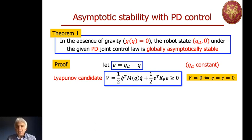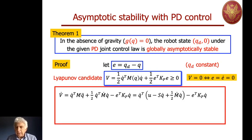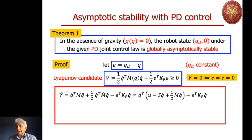So we have a good candidate — a function which is always positive except where we want to be: the desired closed-loop equilibrium state q = qd and q_dot = 0. Now let's consider the time derivative of this function, evaluated along the trajectory of our robotic system — the evolution satisfying the closed-loop dynamic equation. Recall that g(q) = 0, so the closed-loop dynamics are M(q)*q_ddot + C(q,q_dot)*q_dot = u_PD.